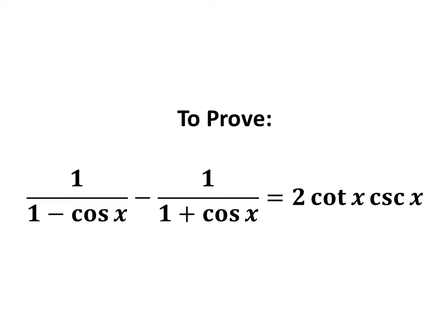In this video, we will learn to prove the trigonometric identity: 1 upon 1 minus cosine of x, minus 1 upon 1 plus cosine of x, is equal to 2 times cotangent of x times cosecant of x.